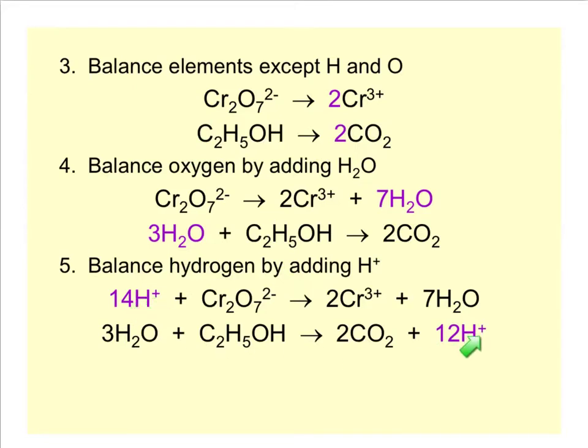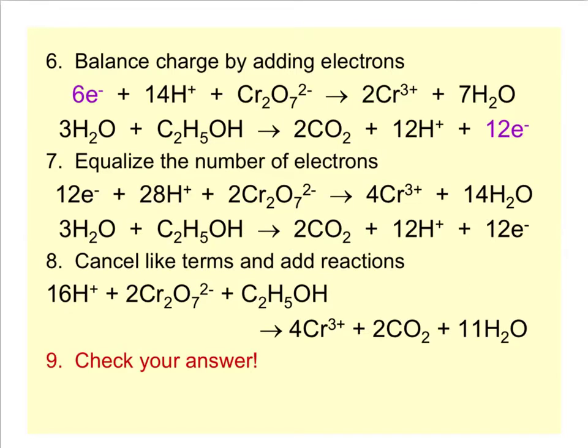By adding water and fixing the oxygen, we mess up the hydrogen. By adding hydrogen to fix the hydrogens, we introduce charge and mess up the charge. So next we have to fix the charge. We're going to balance charge by adding electrons. Electrons are negative. I have plus-6 on the right, minus-2 plus 14 for a total of plus-12 on the left, so I add six electrons to the left to get down to a total of plus-6. I have no charge on the left in my oxidation and plus-12 on the right, so I need to add 12 electrons on the right of the oxidation.